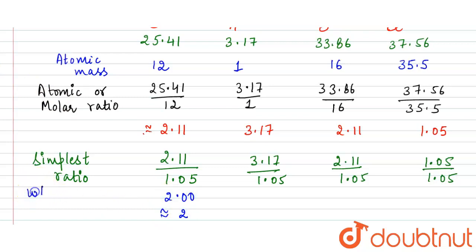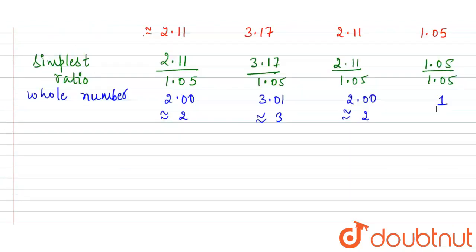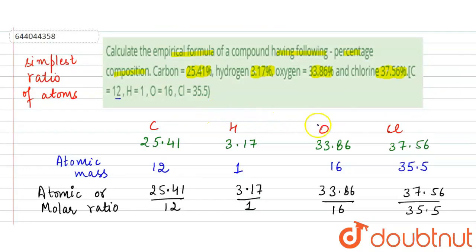This is the whole number ratio. Here we will get 3.01, approximately equal to 3. Here we have 2.00, approximately equal to 2. Here we have 1 only. Now we have got the ratio. This was our carbon, hydrogen, oxygen, and chlorine. We can write that the ratio of carbon, hydrogen, oxygen, and chlorine is 2:3:2:1.